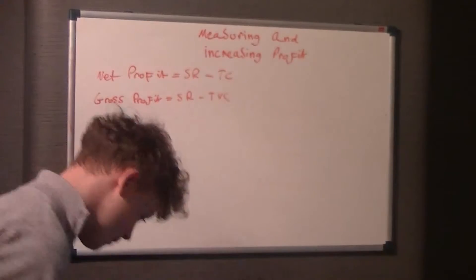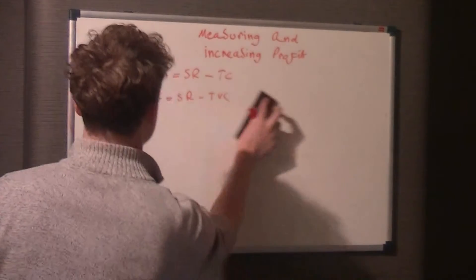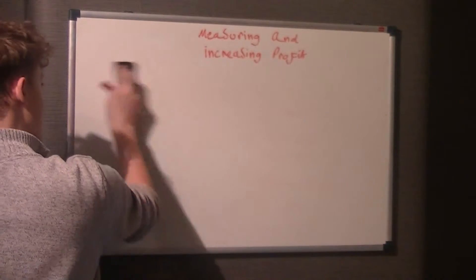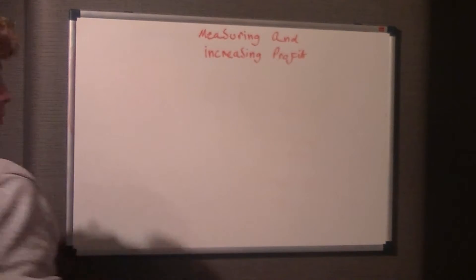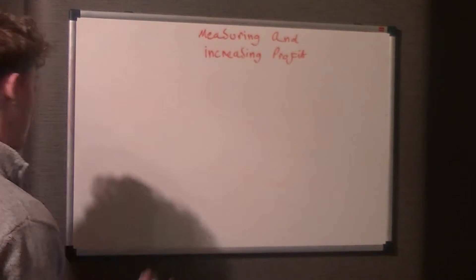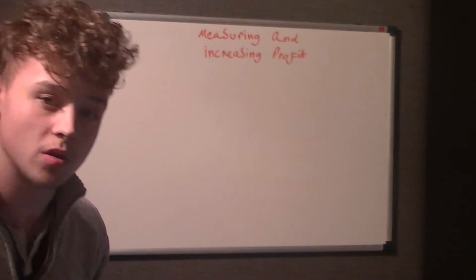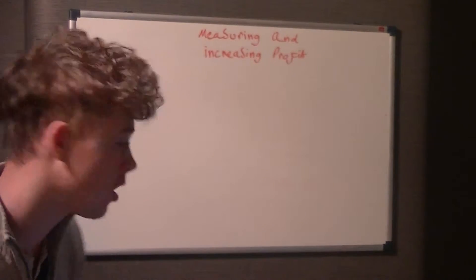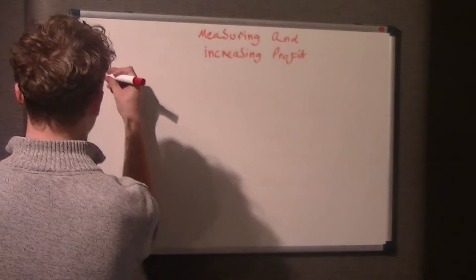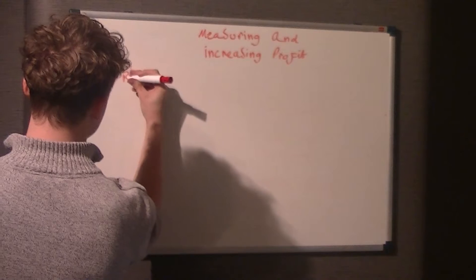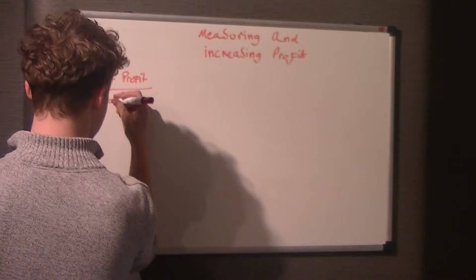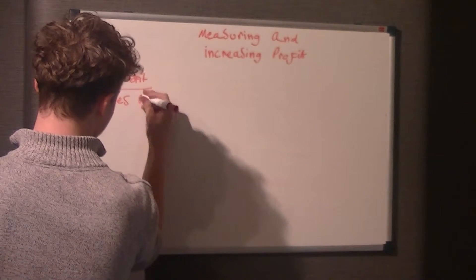So how can we work out the gross net profit margins of a business? Because this is sometimes asked in an exam. Well, net profit margin is, as we said, we work out net profit as sales revenue minus total costs. So to work out the net profit margin, what we do is net profit as a percentage of the sales revenue times 100.